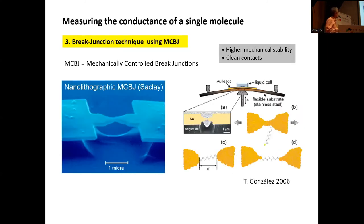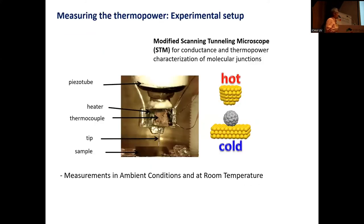With STM, you can go to many places, whereas with a fixed break junction you are limited to one area. If you want to measure thermal power, you need a heat source. We added a heater to the STM tip so you can apply a temperature difference to the top electrode while the surface remains cold, with a thermocouple to monitor temperature. This allows measurements in ambient conditions at room temperature.